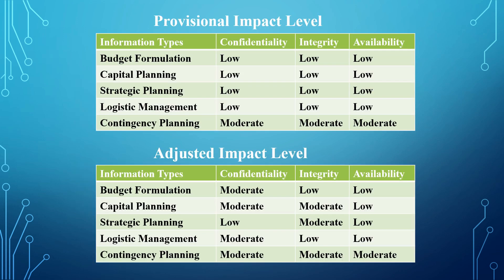In reviewing and adjusting the provisional impact levels, the table shown displays the provisional impact levels we worked on previously. Note that you also have to document the rationale for each determination — for example, why did you determine that the impact to confidentiality for budget formulation is low?